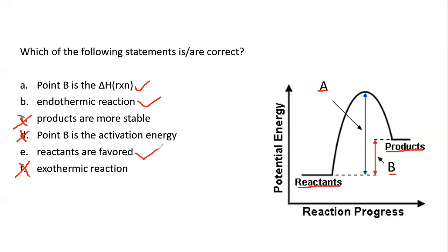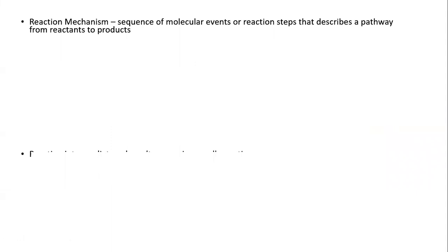That is how you interpret the energy diagram. Now, moving on to the topics in this lecture, we'll be looking at rate mechanisms and their different components. When we talk about reaction mechanisms, we're looking at a sequence — and this is very important — a sequence of molecular events or reaction steps that describe the pathway from reactants to products. We're looking at this reaction on the molecular level.